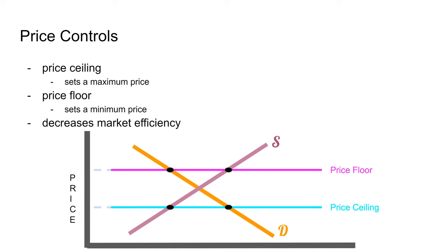There are two types of price controls: price ceilings and price floors. Both decrease market efficiency because you're setting a price away from equilibrium. A price ceiling sets a maximum price and is only effective if placed below equilibrium. A price floor sets a minimum price for the market and is only effective if placed above the market equilibrium.